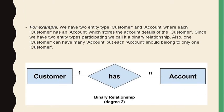For example, there are two entity types: Customer and Account. Each customer has an account that stores their account details. Since two entity types are participating, we call it a binary relationship with degree two. A customer can have many accounts, but each account should belong to only one customer. Binary relationships are mostly used because they are easy to handle in a relational database.